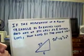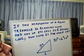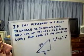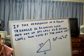If the hypotenuse of a right triangle is ten inches long and one of its legs is six inches long, how long is the other leg?